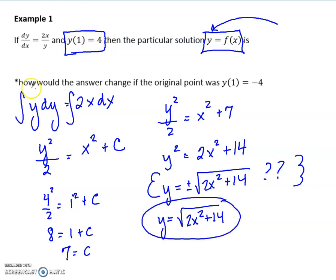So this asterisk here says, how would it change if you want it to be 1 but negative 4? Well, if I want to get out a negative 4 when I plug in a 1 to my final answer, if I plug in a 1 here, then I would need the negative version so that it comes out to a negative square root. So it would be negative root 2x squared plus 14 for my y value.